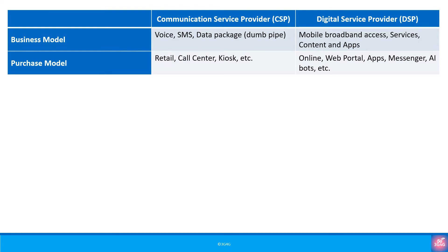With the CSP, you purchase the services from a shop, kiosk, store, call centre, etc. With the DSP, you will purchase things online via a web portal or an app using Messenger, AI bots, etc. There will be no human interaction.